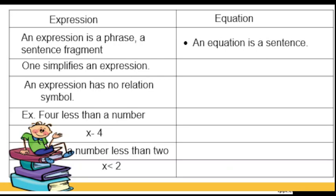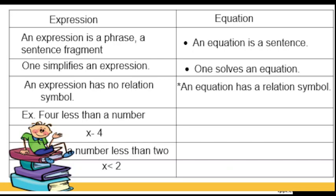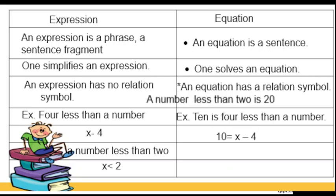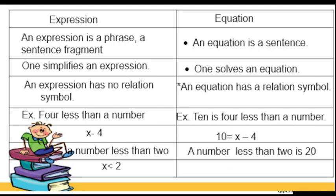Again, equation is a sentence. One solves an equation. The other one, one simplifies an expression. An equation has relation symbol, whereas expression has no relation symbol. And it has an equal sign. Is is an equal sign. So 10 equals x minus 4, and number less than 2 is 20. Is is an equal sign. So we have x less than 2 equals 20.